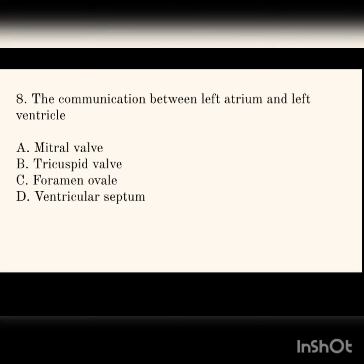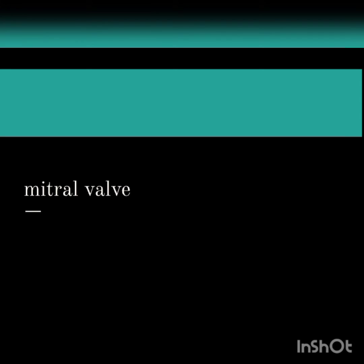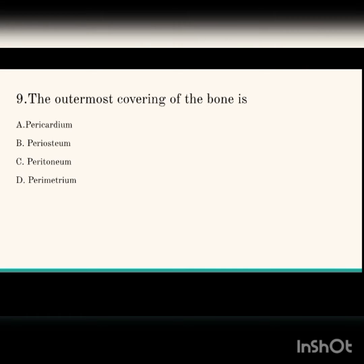Next question: the communication between the left atrium and left ventricle. The options are mitral valve, tricuspid valve, foramen ovale, and ventricular septum. The answer is mitral valve. The communication between the right atrium and right ventricle is the tricuspid valve.